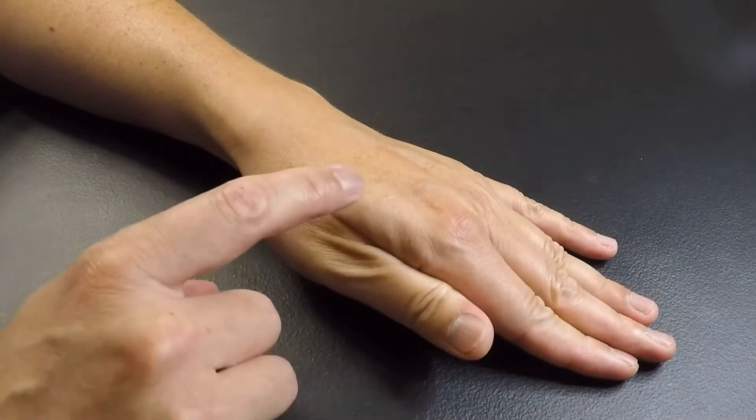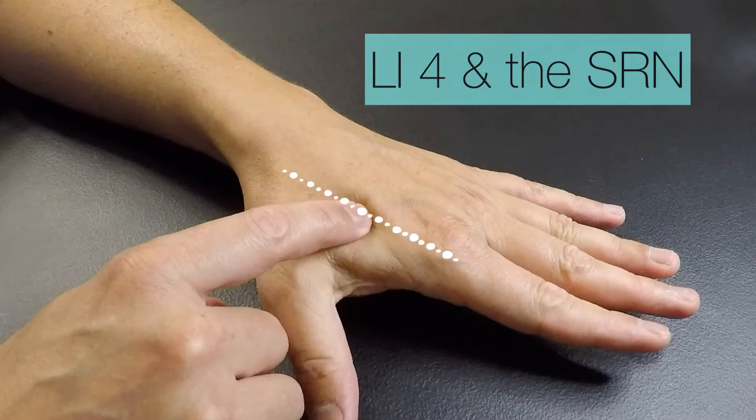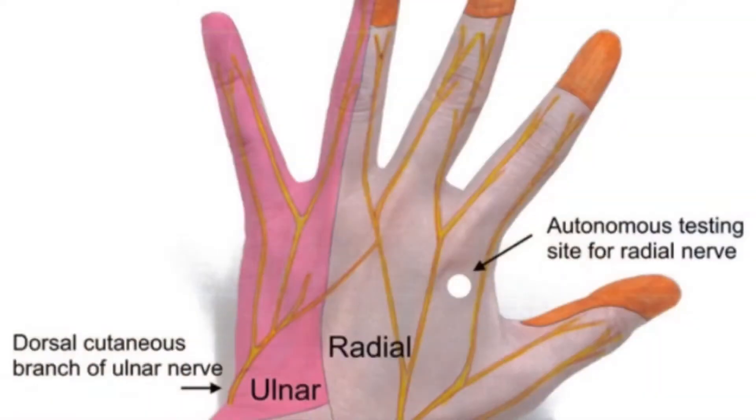Okay, today we're going to talk about the nerve at Large Intestine 4, which is the superficial radial nerve. Here you can see where the green arrows are pointing, so there's a branch of the nerve that runs right along the large intestine channel.